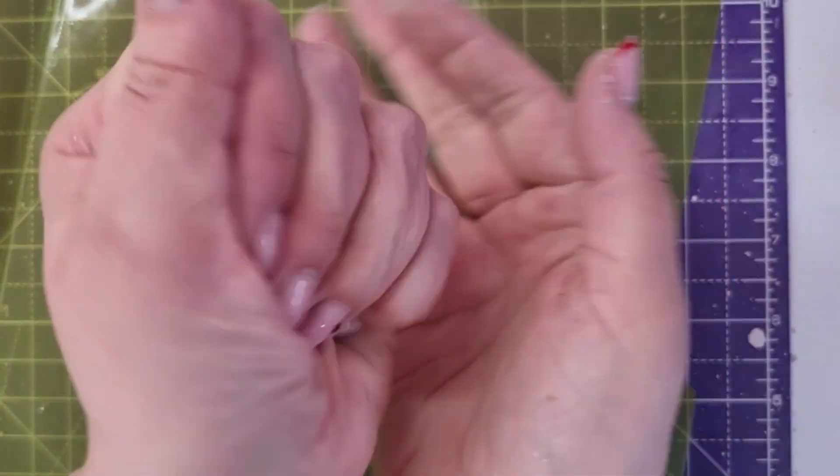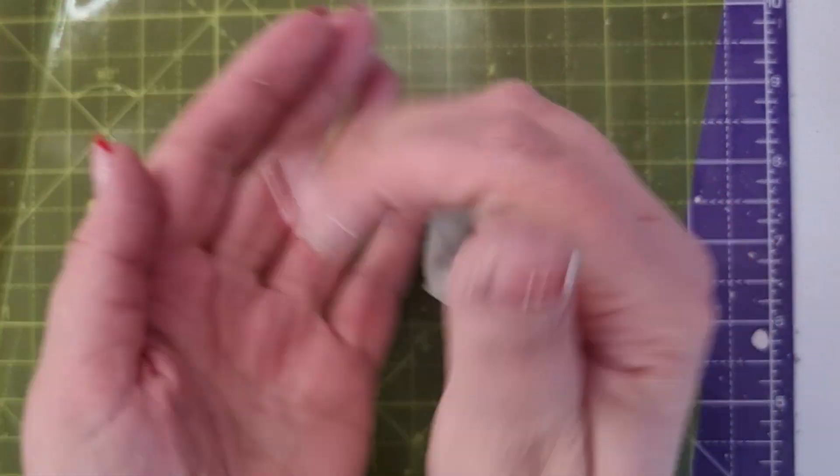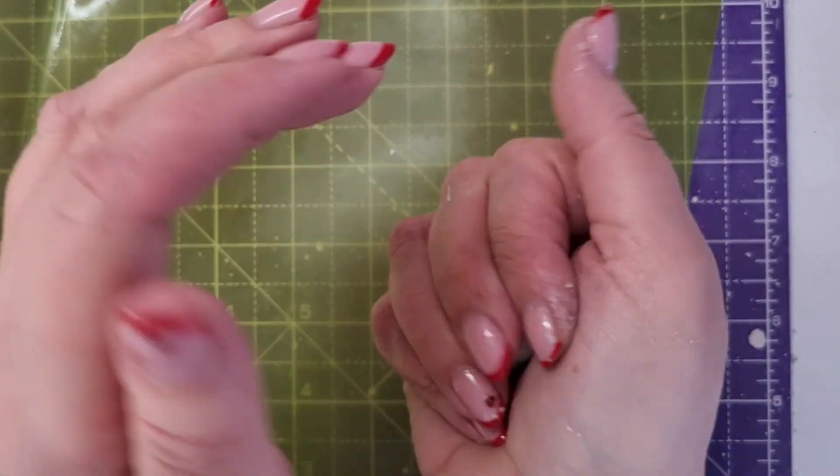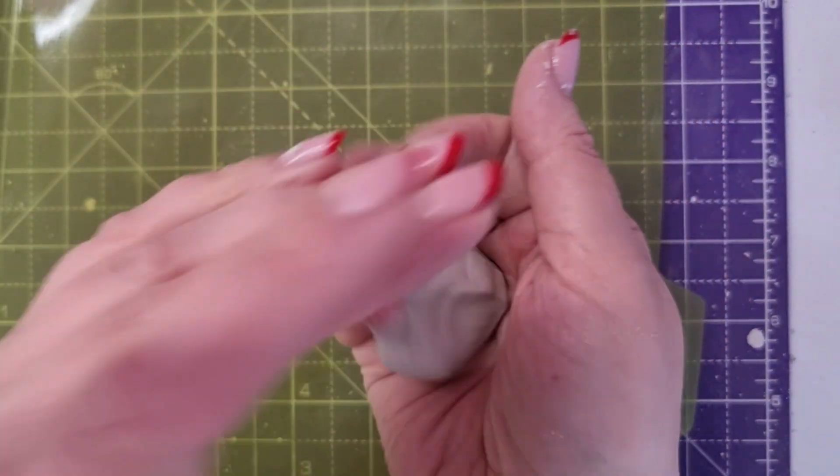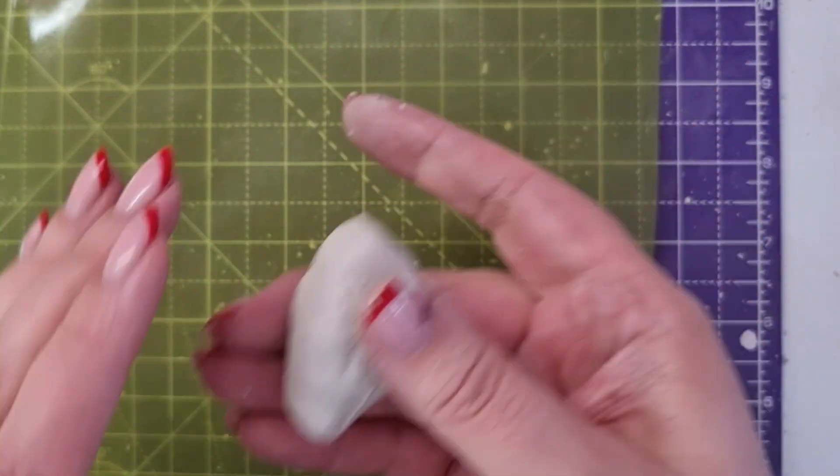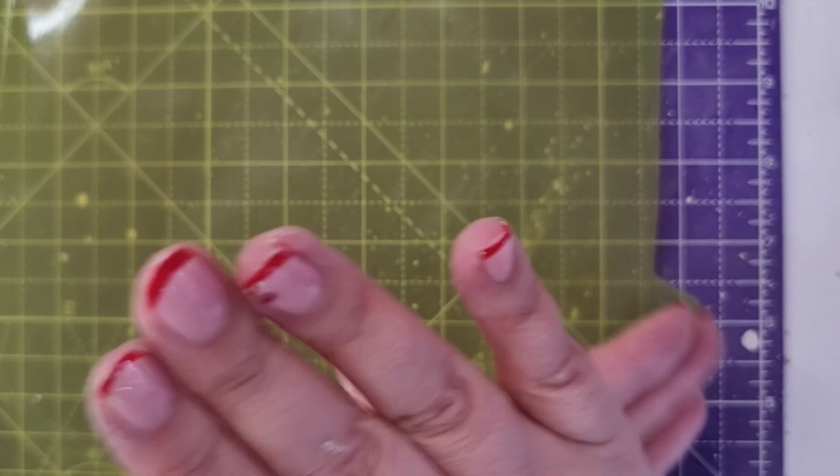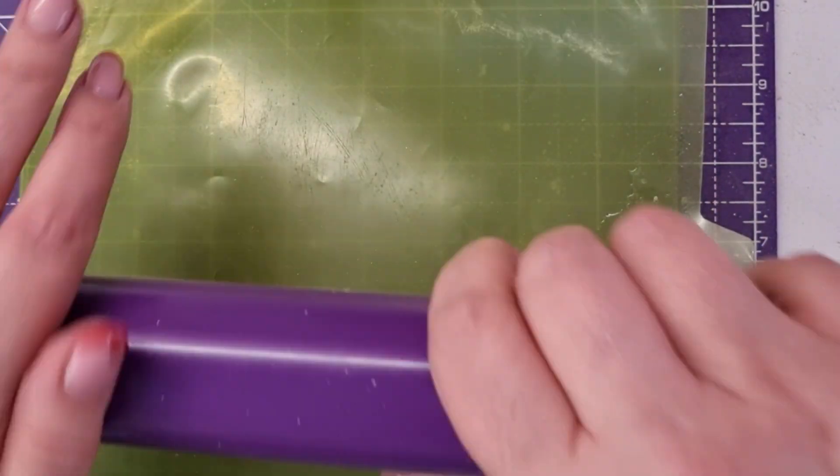You'll be able to feel it in your hands as well, how soft it is and how malleable it is. That's another good test if you're familiar with clay and how it should feel. You should start to see that it's coming together really nicely, looking really smooth and homogenous. I'm going to just do this one more time.